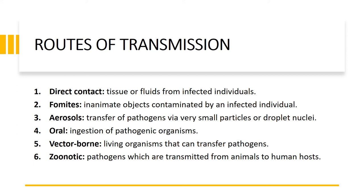The fifth route is vector-borne transmission. This can be contained by controlling or limiting the spread of the vector itself, such as mosquitoes or helminths. Finally, we have zoonotic pathogens. Zoonotic pathogens have increased in terms of transmission as an increasing number of individuals are living at the peripheries of forested areas, resulting in an increase in the prevalence of pathogens transmitted via zoonotic agents.